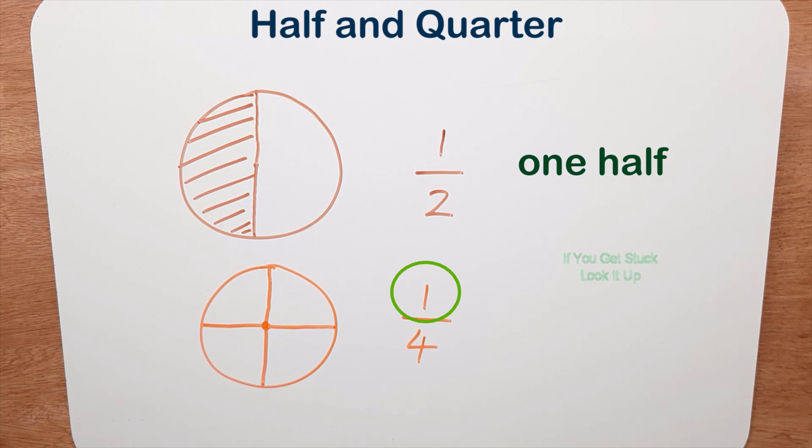And that's the top number, the numerator. So I simply shade this. So I've now shaded one quarter of this pizza.